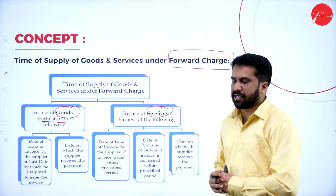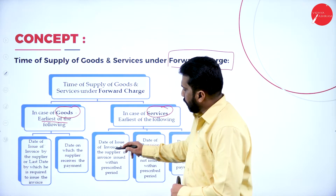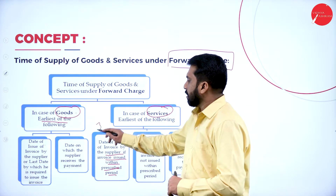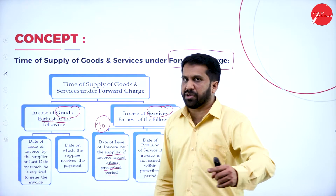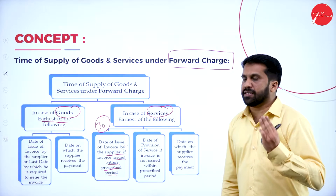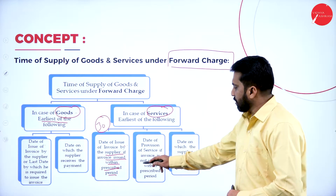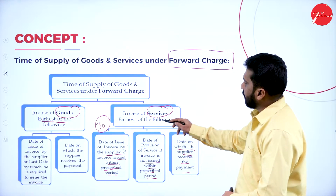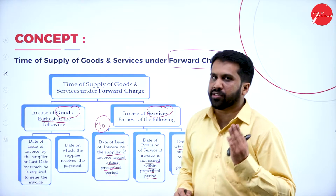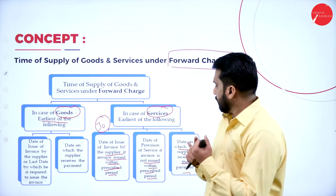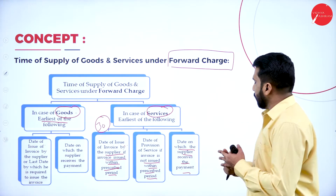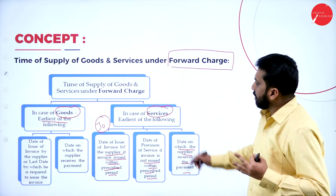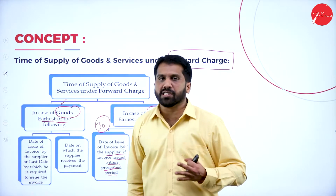In case of services under forward charge: first, the date of issue of invoice by the supplier if the invoice is issued within the prescribed period — remember, 30 days under forward charge. Second, the date of provision of service if the invoice is not issued within the prescribed period. Third, the date on which the supplier receives payment. Earliest of these three is the time of supply for services.